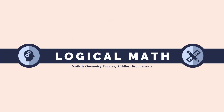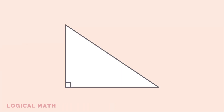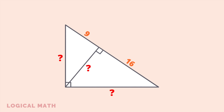Hey guys, you are watching a new video on the Logical Math channel. The perpendicular dropped from the vertex of the right angle upon the hypotenuse divides it into two segments of 9 and 16 feet respectively. Find the length of the perpendicular and the two legs of the triangle.